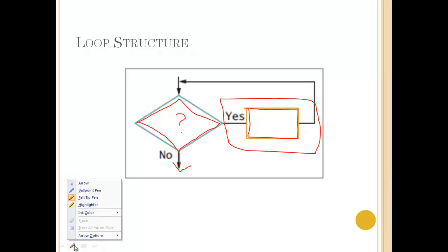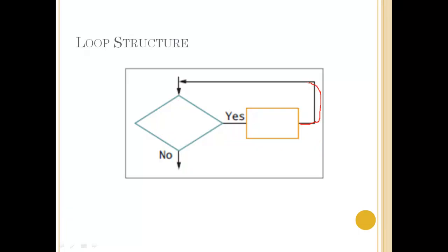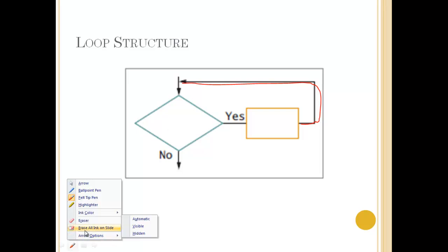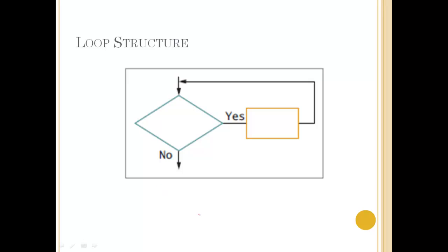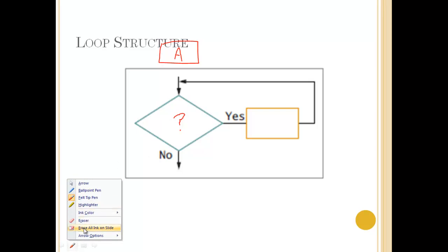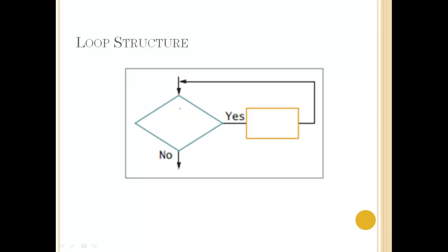The flow lines for the yes will go directly back to right above the decision. What we're not seeing here, because it is not part of the loop structure, is that there has to be a process somewhere in the program before this decision. That process has to be there because it has to set a sentinel value — the sentinel value or the priming read — so that this decision has some sort of data to evaluate. So process A in this example has to occur before decision B, but it is not necessarily part of the loop.